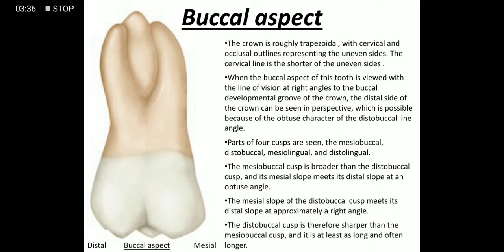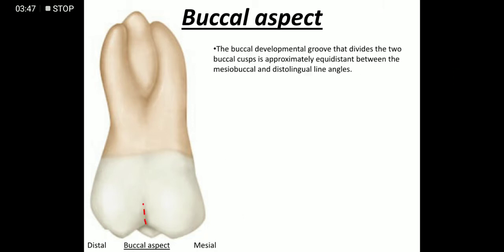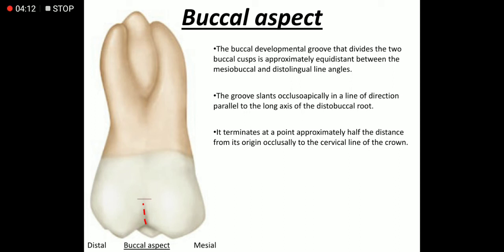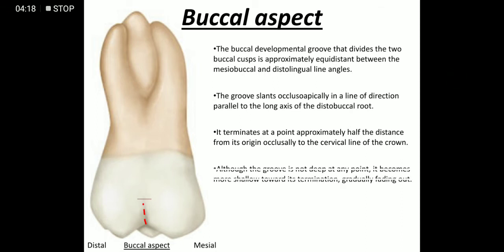The distobuccal cusp is therefore sharper than the mesobuccal cusp and is at least as long and often longer. The buccal developmental groove that divides the buccal cusps into two parts is approximately equidistant between the mesobuccal and the distobuccal line angles. The groove slants occlusoapically in a direction parallel to the long axis of the distobuccal root, terminating approximately half the distance from its origin occlusally to the cervical line. Although the groove is not deep at any point, it becomes more shallow towards its termination, gradually fading out.